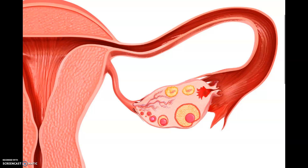In this video we're going to explore the hormones involved in fertilization and implantation. If you haven't seen my previous two videos on the female reproductive axes or the structure of the ovary and uterus, please go back and watch those now — I'll attach links in the comment section. Let's jump right into it.